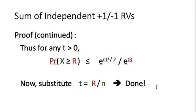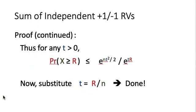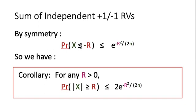Notice that for x being the sum of plus or minus 1 random variables, the expected value of x is zero, meaning the distribution is symmetric. So if the probability of x ≥ r is bounded by e^{-r²/(2n)}, by symmetry the probability of x ≤ -r is also bounded by the same term. Combining both results, the probability that the absolute value of x is greater than or equal to r is less than or equal to 2·e^{-r²/(2n)}.